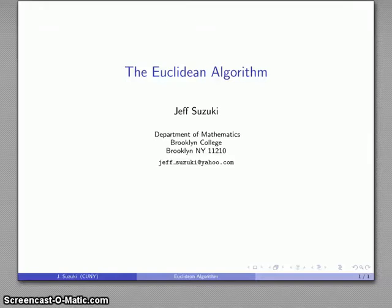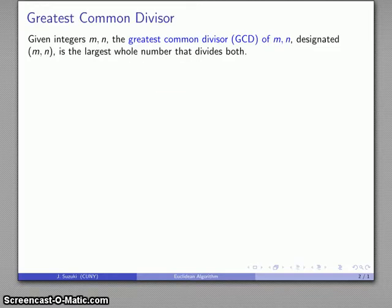One of the things we'll want to be able to do is to find the greatest common divisor of two numbers. That's what the Euclidean algorithm is for. Suppose I have two integers m and n. The greatest common divisor is, of course, the largest whole number that divides both of them.